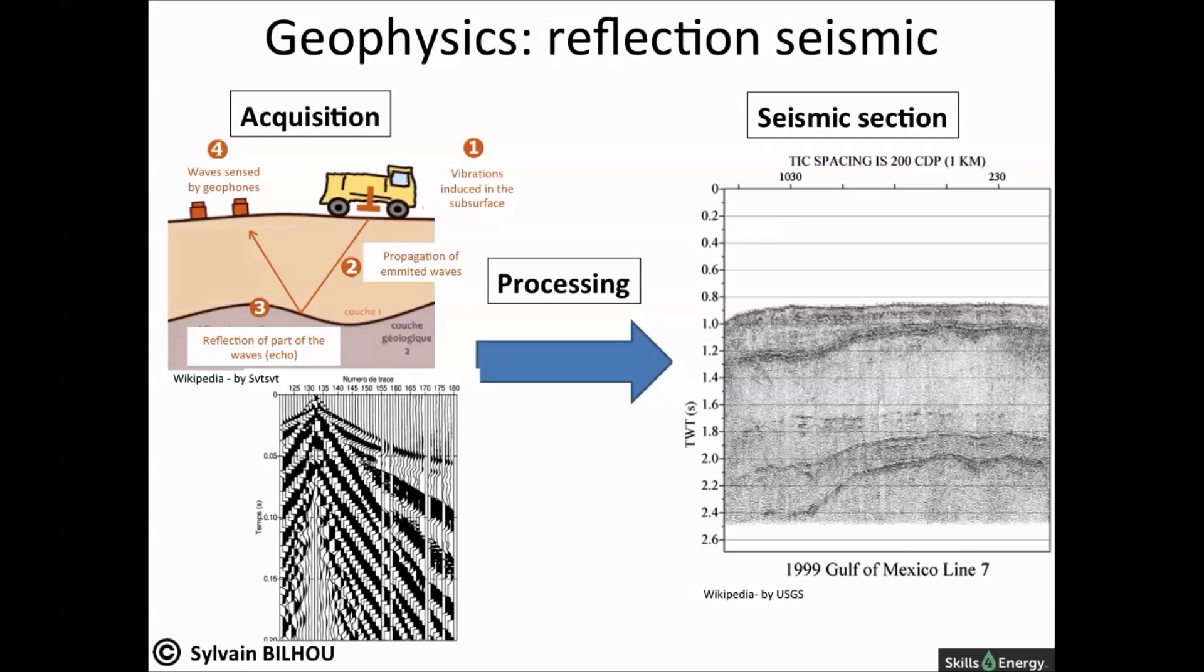On land, the typical receiver used is a small, portable instrument known as a geophone, which converts ground motion into an analog electrical signal.